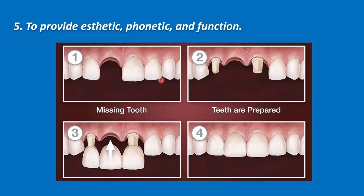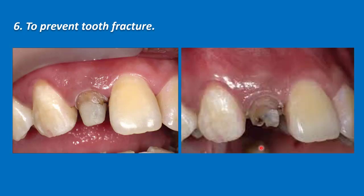Fifth, to provide aesthetics, phonetics, and function. When we prepare the teeth, the aesthetics are poor, the phonetics are very difficult, and the function is impaired. Therefore, if we put a provisional restoration, all these will be restored. Sixth, to prevent tooth fracture — if the prepared tooth is left without a provisional for a long period of time, it may be subjected to occlusal forces which may lead to fracture of the preparation.